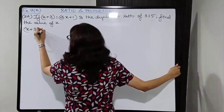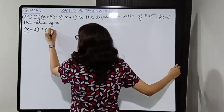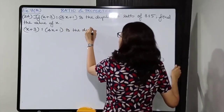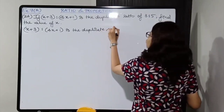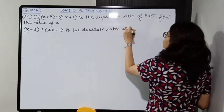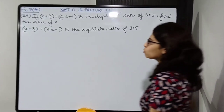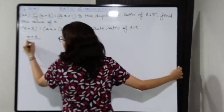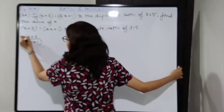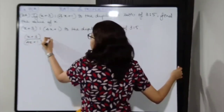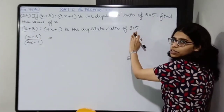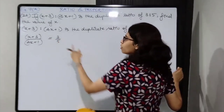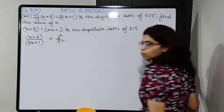Write down the statement first: x plus 3 is to 4x plus 1 is the duplicate ratio of 3 is to 5. This means x plus 3 upon 4x plus 1 is equal to the square of this ratio — that is, 3 is to 5 is nothing but 3 upon 5, so you have to square it.